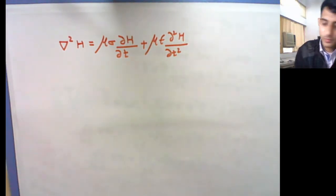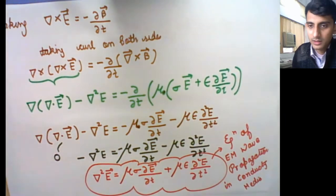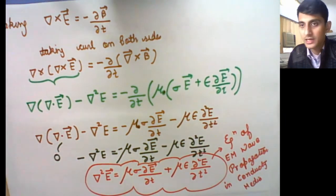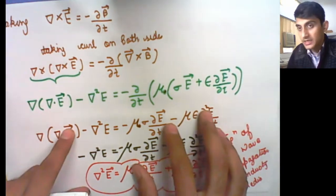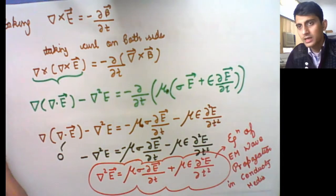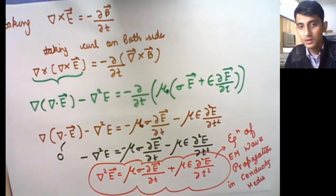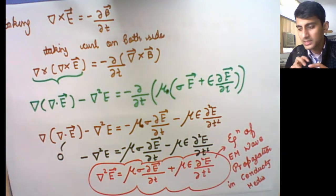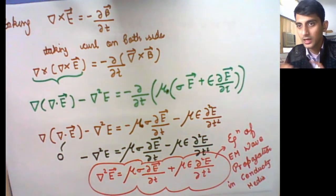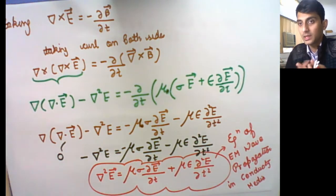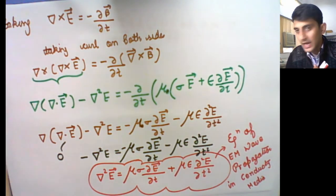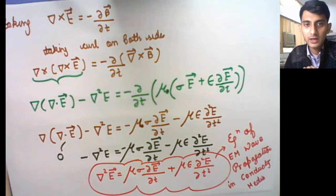Now we will move on to the Poynting theorem and Poynting vector. When electric and magnetic waves propagate, they carry energy through radiation. The concept of how electromagnetic radiation transports energy is what we will study next in the Poynting vector and Poynting theorem.